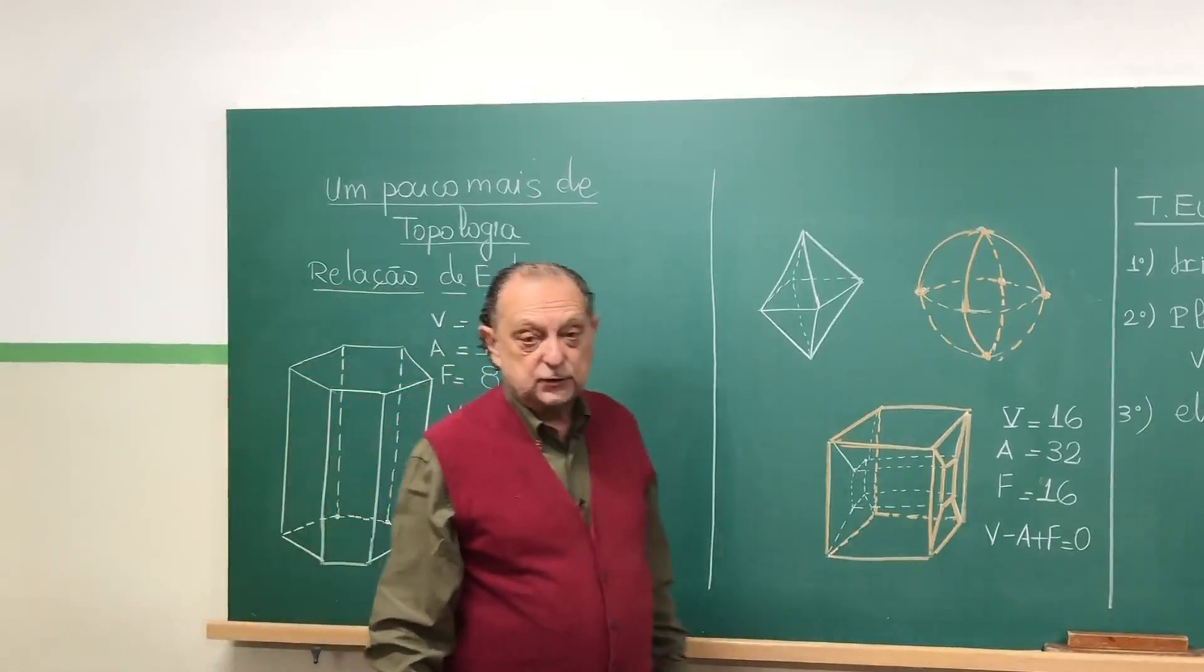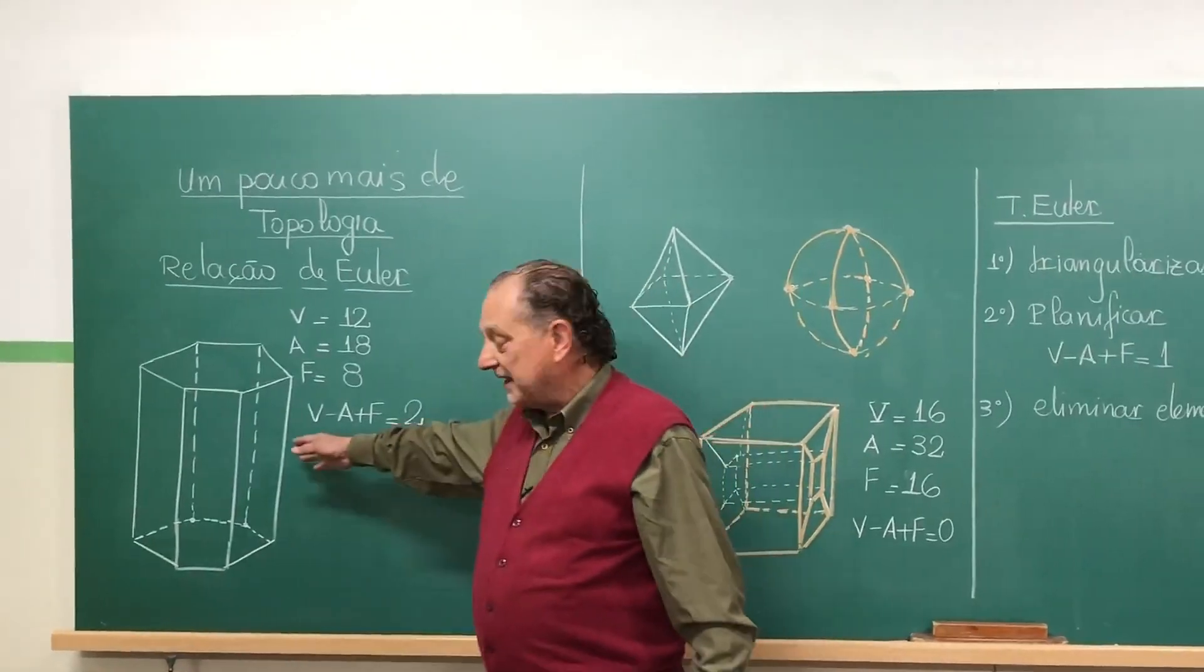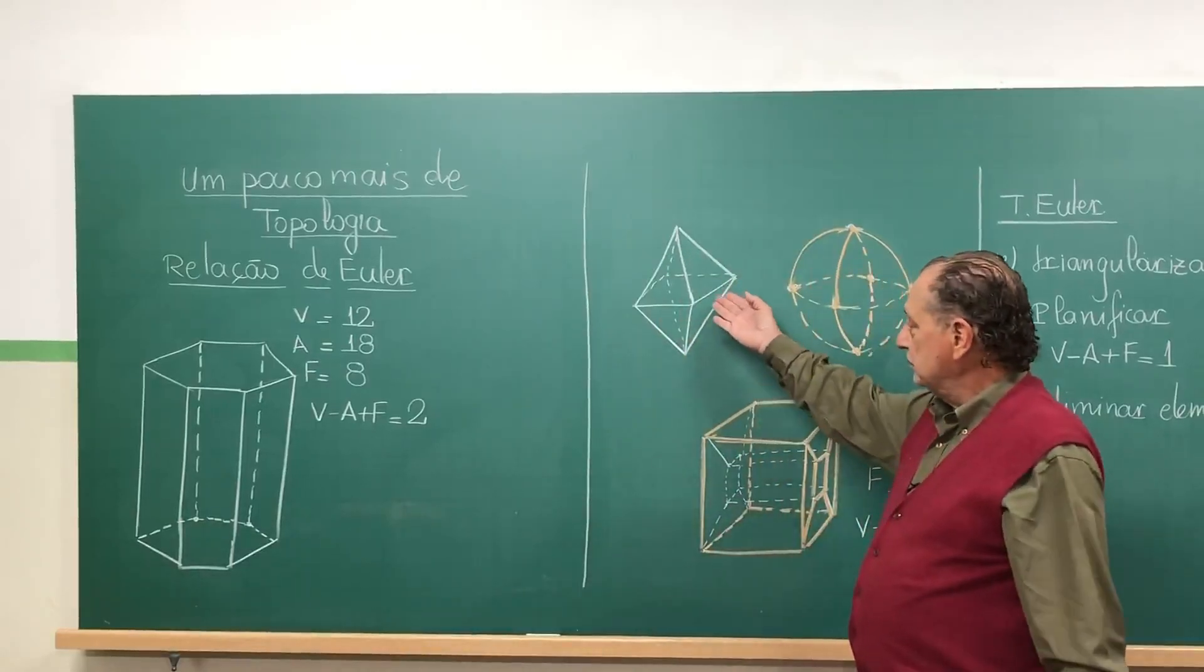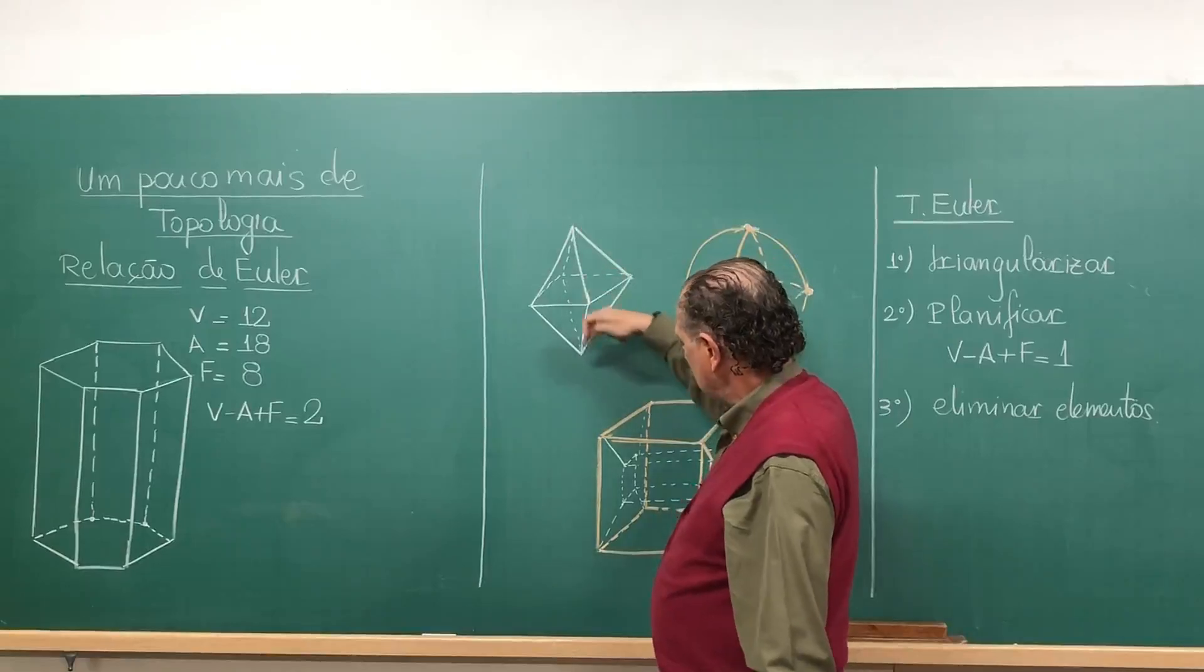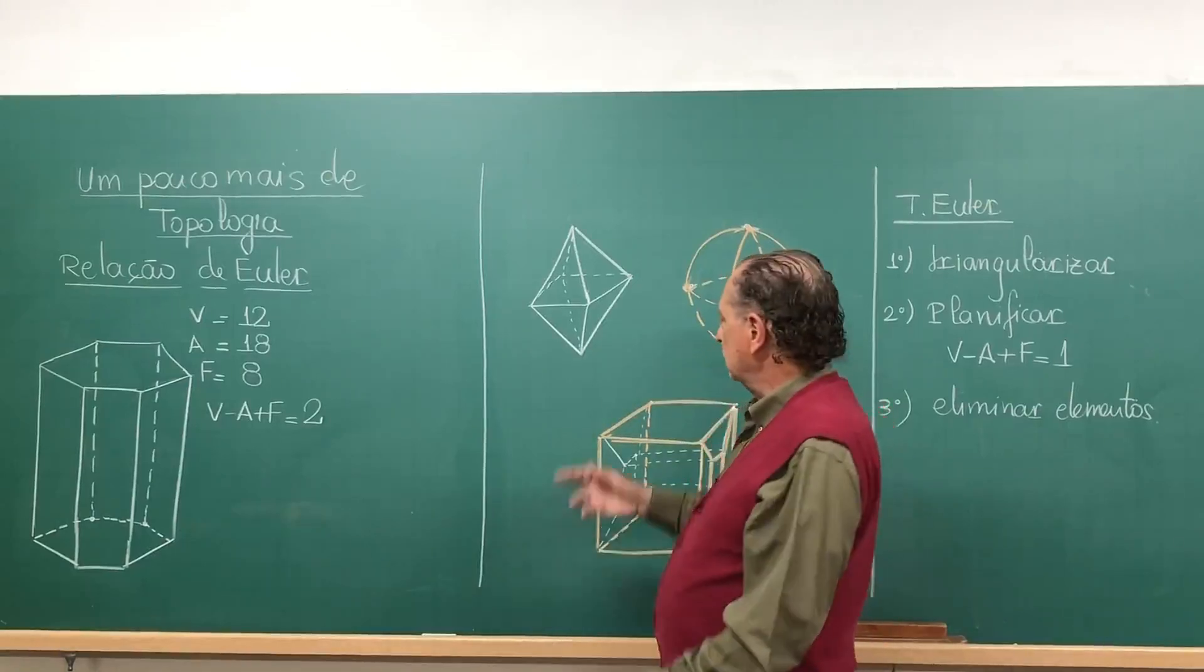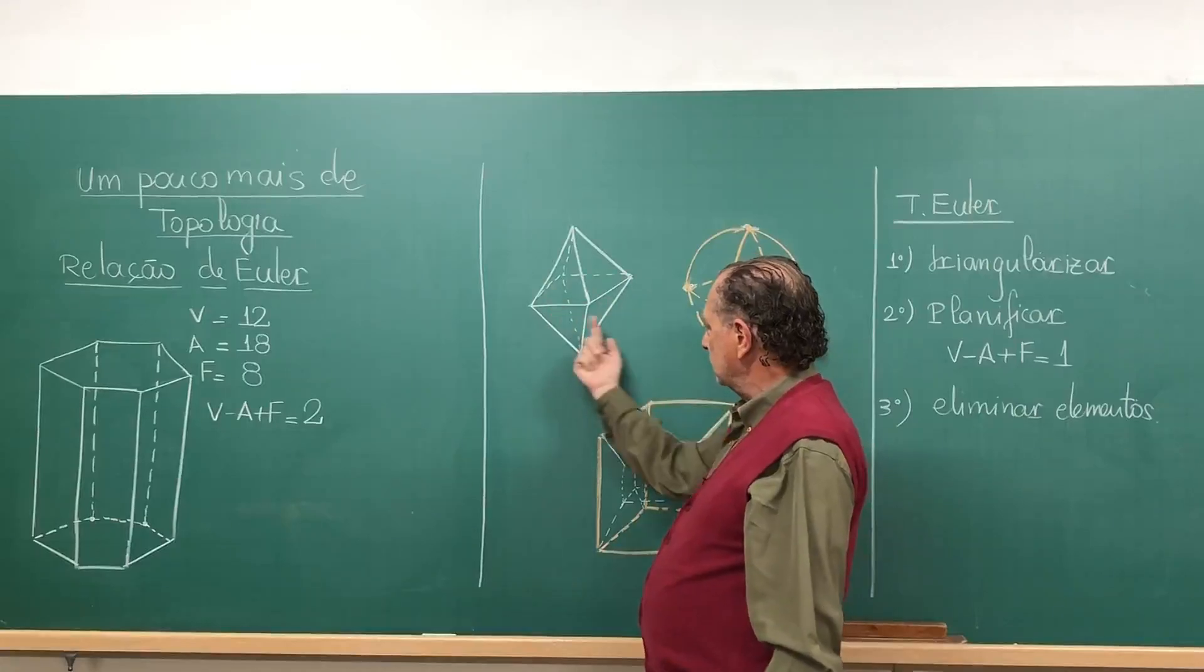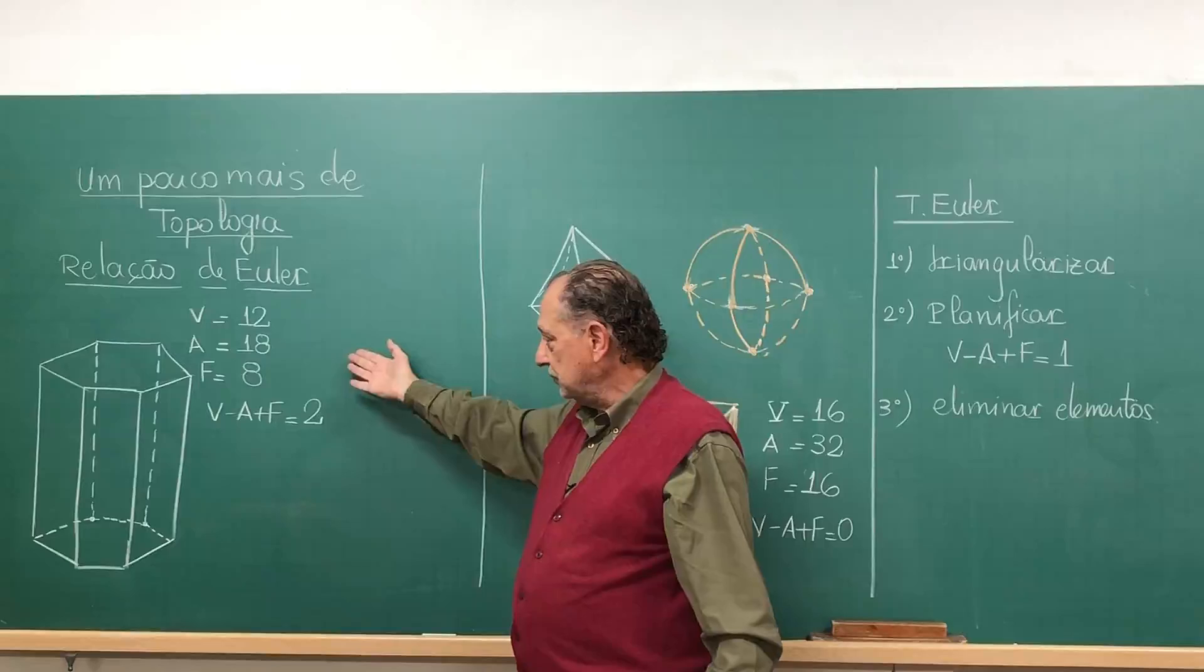First this is a result of topology. It doesn't even depend on these being straight lines, nothing like that. It holds for the octahedron. Vertices 6, faces 8. 6 plus 8 is 14, and arestas 12, 4 on top, 4 on bottom, 4 horizontal, 14 minus 12 is 2.